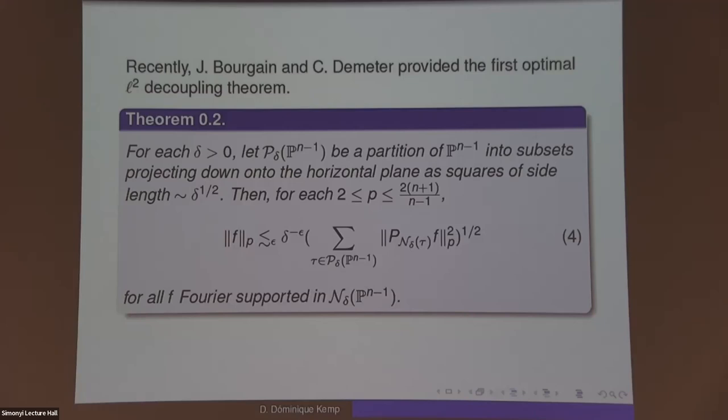Bourgain and Demeter were aware of this paper and found the arguments made there for the curve to be valid as well for the paraboloid. But what Wolff did not have were the multilinear techniques that became very helpful upon the discovery of Bennett, Carbery, and Tao. By combining these with Wolff's scale-based arguments, they provided this fully optimal L² decoupling theorem for the paraboloid.